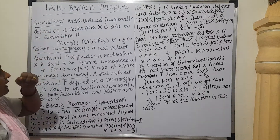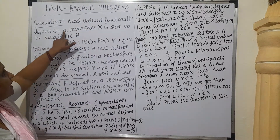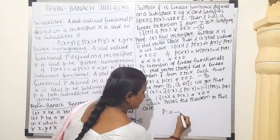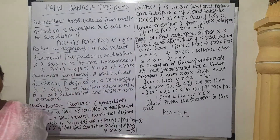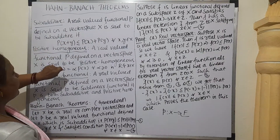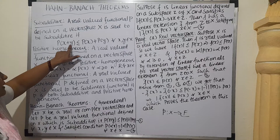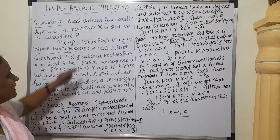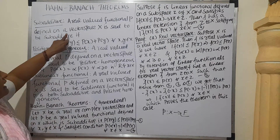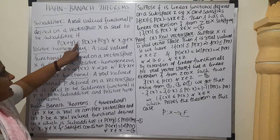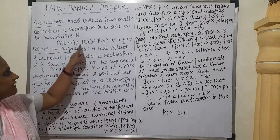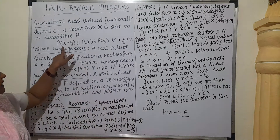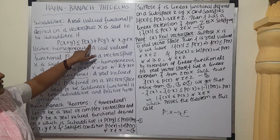First is sub-additive. If we have a real-valued functional P defined on a vector space X — meaning P is a functional from X to F, where F is the field defined for the vector space X — if P satisfies P(x+y) ≤ P(x) + P(y) for every x and y in X, then we call it sub-additive. For a linear functional, P(x+y) = P(x) + P(y), but if it is less than or equal to, we call it sub-additive.